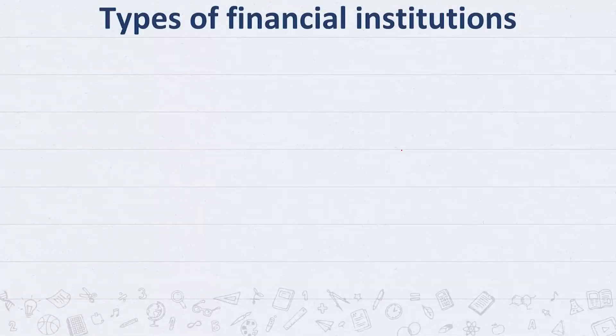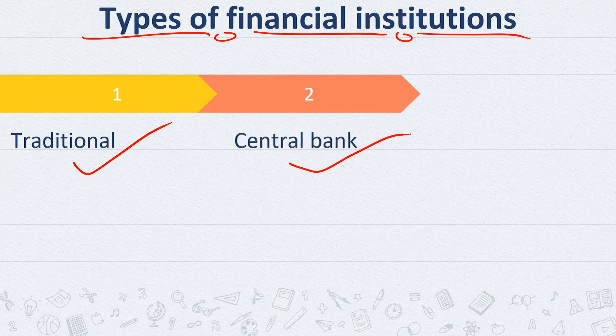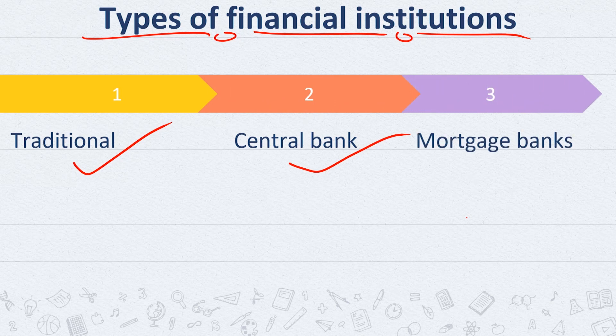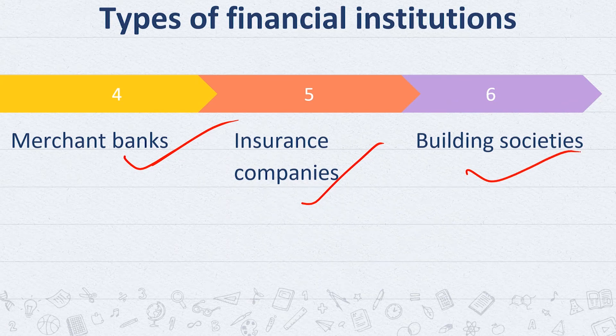Now let's look at the types of financial institutions. We have: number one, traditional financial institutions; number two, the central bank; number three, mortgage banks; number four, merchant banks; number five, insurance companies; and number six, building societies. Financial institutions can broadly be categorized into traditional and non-traditional financial institutions.